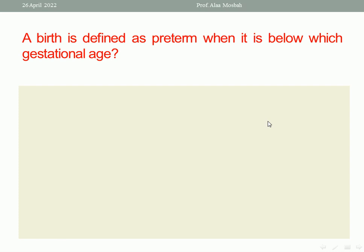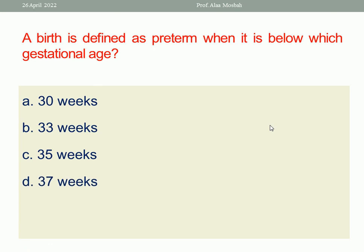Next question: A birth is defined as preterm when it is below which gestational age? Options: 30 weeks, 33 weeks, 35 weeks, 37 weeks, or 28 weeks. As regards the definition of preterm, the best one response here is 37 weeks.